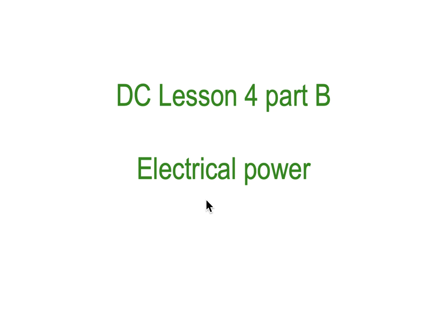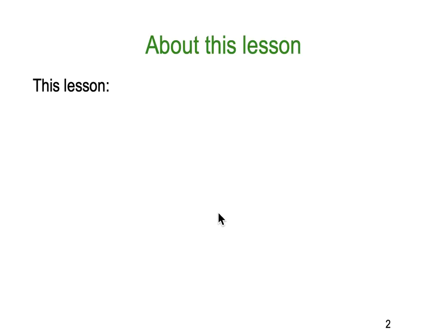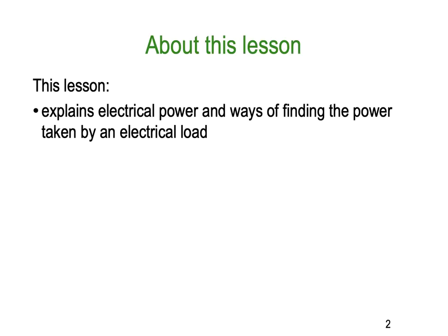This is DC Lesson 4 Part B and we're going to get into power. The previous lesson introduced you to the concept of power and doing work. Now we're specifically going to get into electrical power. In this lesson I'm going to explain electrical power and the ways of finding the power taken by an electrical load. In our textbook, Electrical Trade Principles by Phillips, the section we're dealing with is section 4.2 power.